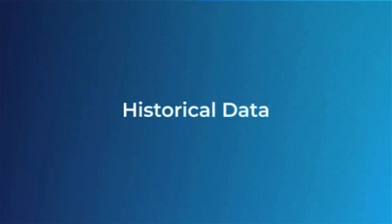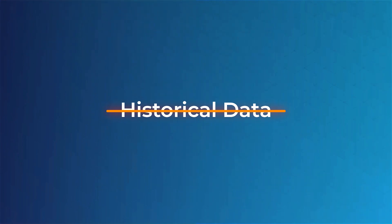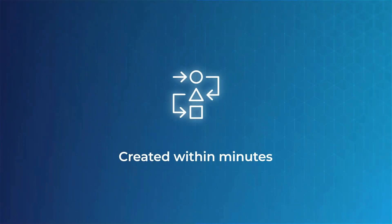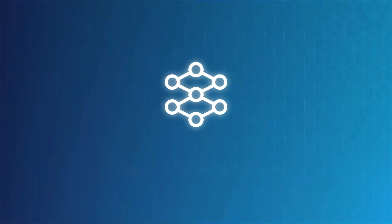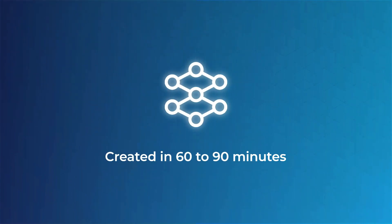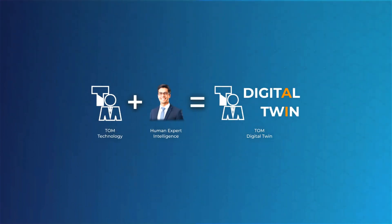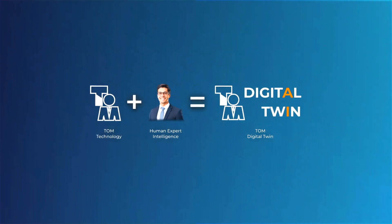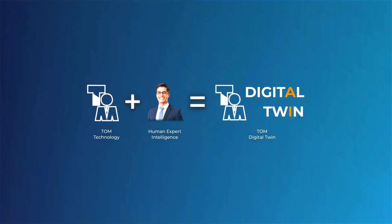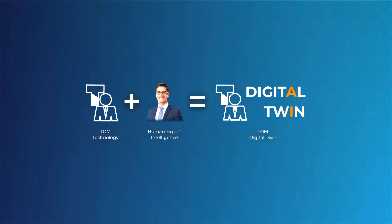What's more, TOM requires no historical data to create a model. Rules-based decision models can be built, trained, and tested within minutes. More complex, intuitive decisions take, on average, 60 to 90 minutes. The decision model responds exactly as its human creator would. This model is called a TOM digital twin.